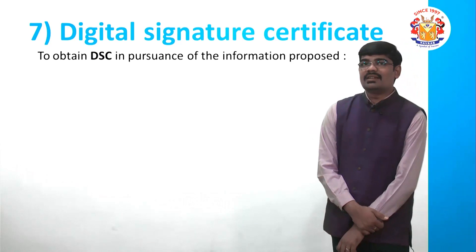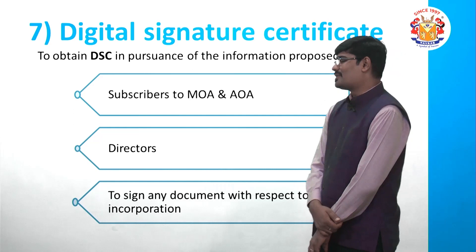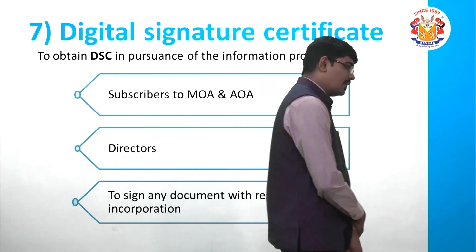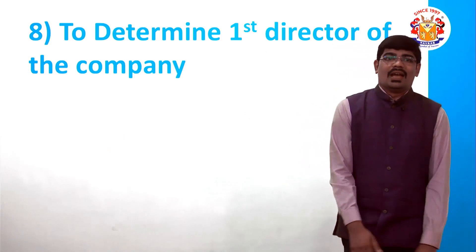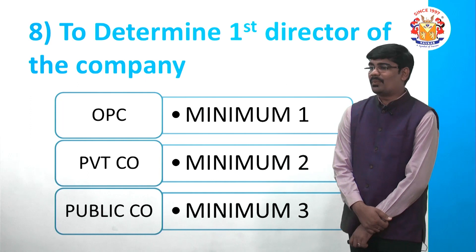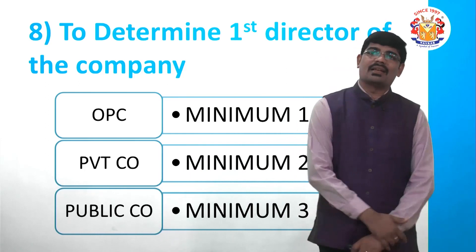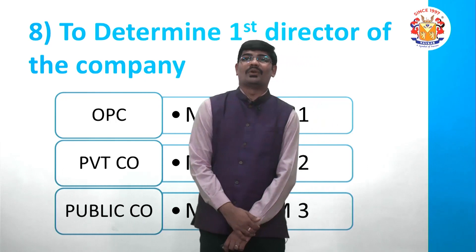After all this, one thing to note is that a Digital Signature Certificate (DSC) must be held by directors, subscribers, and any person with signing authority, because all online incorporation documents must be signed with DSC. Lastly, you need to decide the first directors of the company — for OPC minimum 1, private company minimum 2, public company minimum 3, and you can have up to 15. Beyond 15 requires shareholder approval via special resolution in a general meeting.